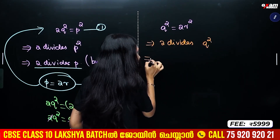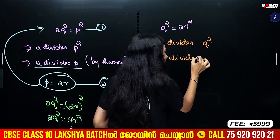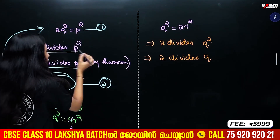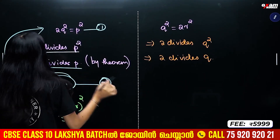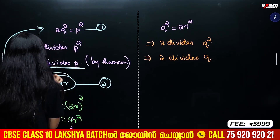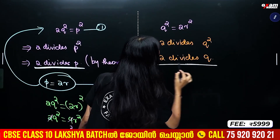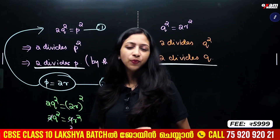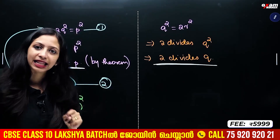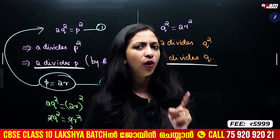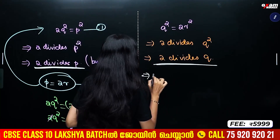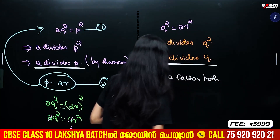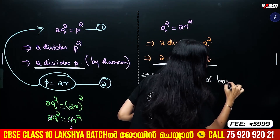2 divides Q squared. By the same theorem, 2 divides Q. So we have found that 2 divides both P and Q. Since 2 is a common factor of both P and Q, this is a contradiction.